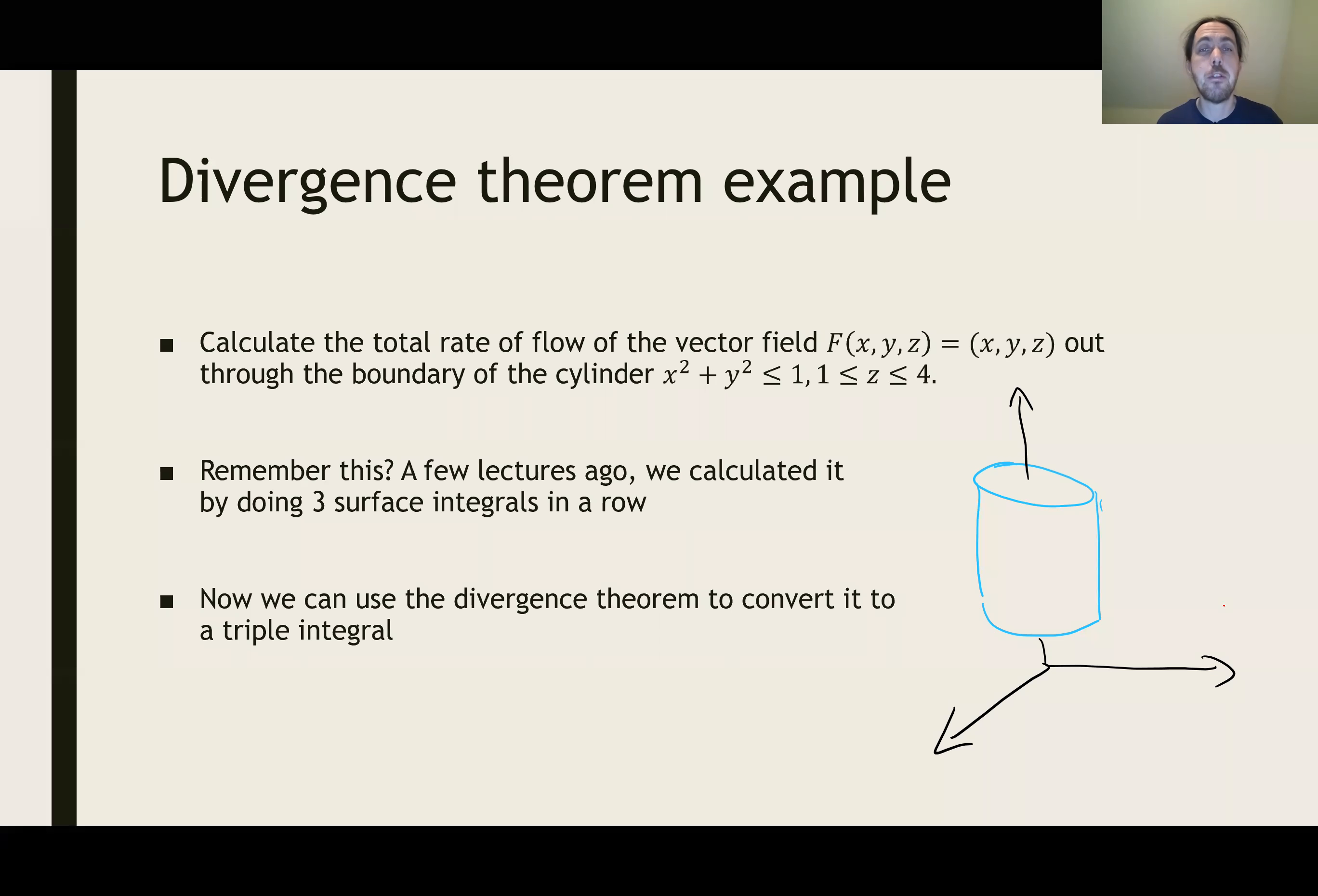Here's an example of calculating with the divergence theorem, which may look familiar. We have the vector field F(x, y, z) = (x, y, z), and we want to calculate the total flow of that vector field out through the boundary of the cylinder x² + y² ≤ 1, 1 ≤ z ≤ 4.